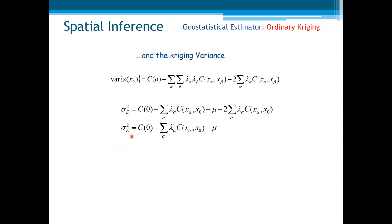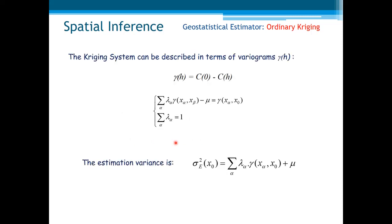The Kriging system can also be described in terms of variograms. Using the classical expression relating variograms and covariance, we can replace the covariance by the variograms. The estimation variance can likewise be written in terms of the variograms between samples and the point to be estimated.